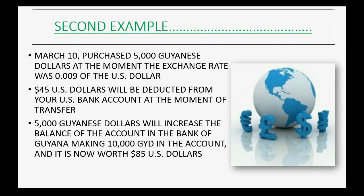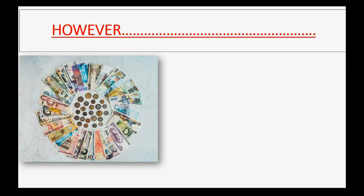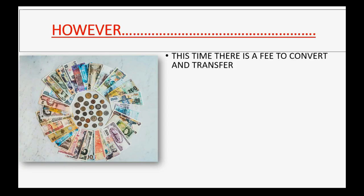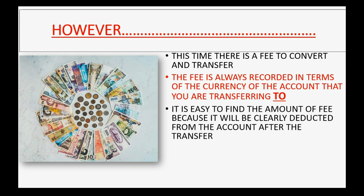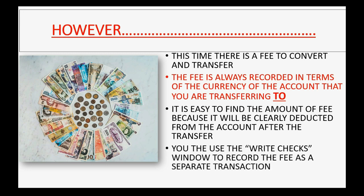We would enter this the same way as the previous example; however, in this case there is a fee to convert and transfer. The fee is always recorded in terms of the currency of the account you are transferring to. It's easy to find the fee amount — it will be clearly deducted from the account after the transfer. Whatever the difference is between what it is and what it should be is the fee amount.